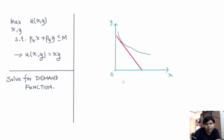Condition number one is this arbitrary point (x, y), or the optimal point (x, y), must be on the budget line. So basically it must satisfy px times x plus py times y equal to m.